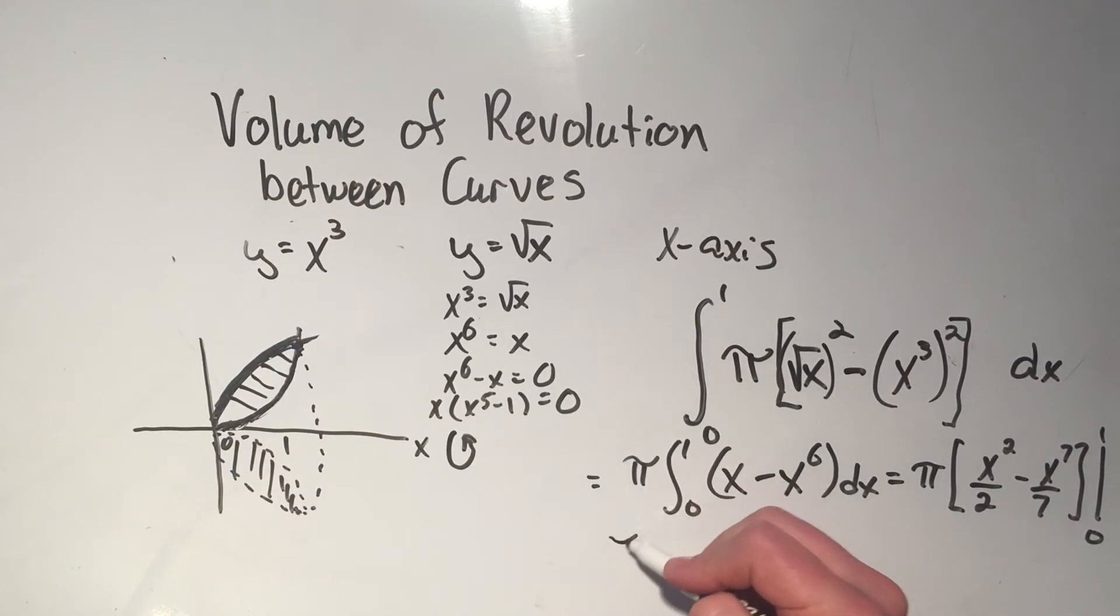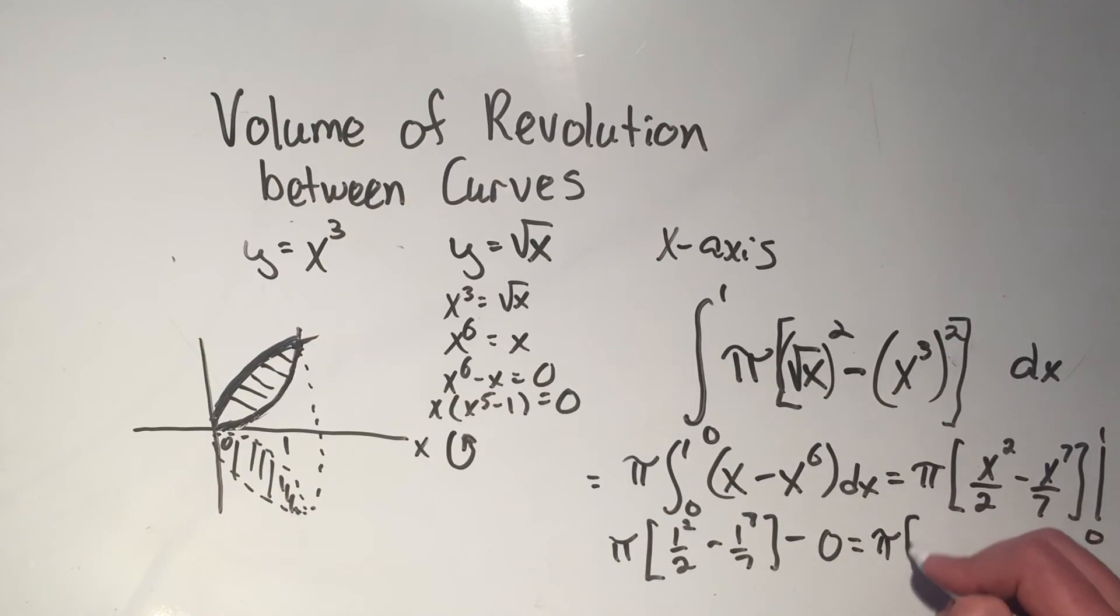And then I apply the fundamental theorem of calculus. I plug in the upper limit, that's one squared over two minus one to the seventh over seven, minus plug in the lower limit. And if you don't mind, if I just plug in zero, I'm going to get zero. So I'm not even going to bother really doing that. And one to any power is one. So that's pi times a half minus one to any power is one.